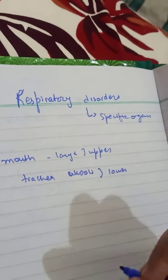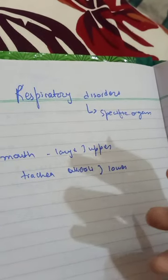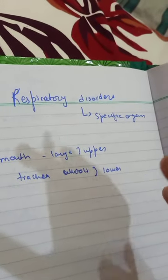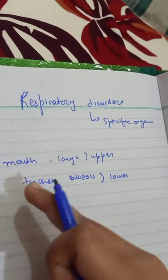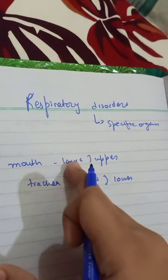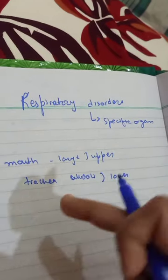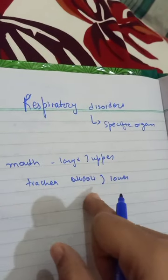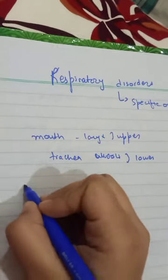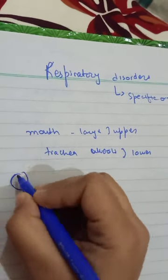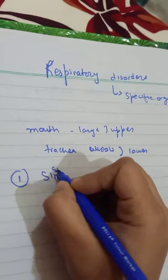If there is any kind of dysfunctioning in the upper tract, that will be the upper respiratory disorder. If it is in the lower tract, that will be the lower respiratory disorder. The first disorder we are going to discuss is sinusitis.